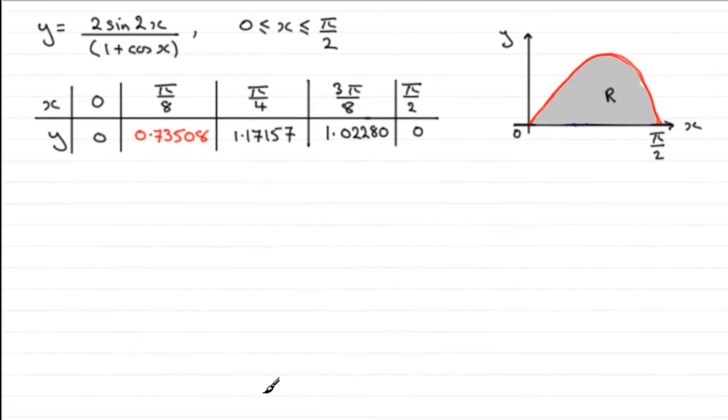Now in this question, we're given this curve here, which is given by the equation y equals 2 sine 2x, all divided by 1 plus cos x. And it's valid for values of x greater than or equal to 0, but less than or equal to pi upon 2. And we're also given this table of values for the graph and are asked to find out what the value is for y when x is pi upon 8.